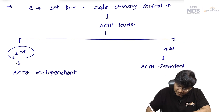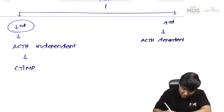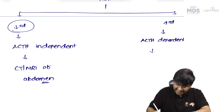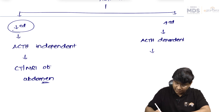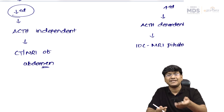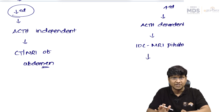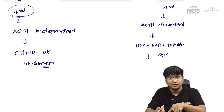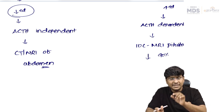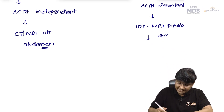For ACTH-independent Cushing's, perform CT or MRI of the abdomen. For ACTH-dependent Cushing's, the investigation of choice is MRI of the pituitary to look for pituitary adenoma. Note that MRI sensitivity is about 90%, so in 10% of individuals with a very small tumor, MRI may not detect the adenoma.